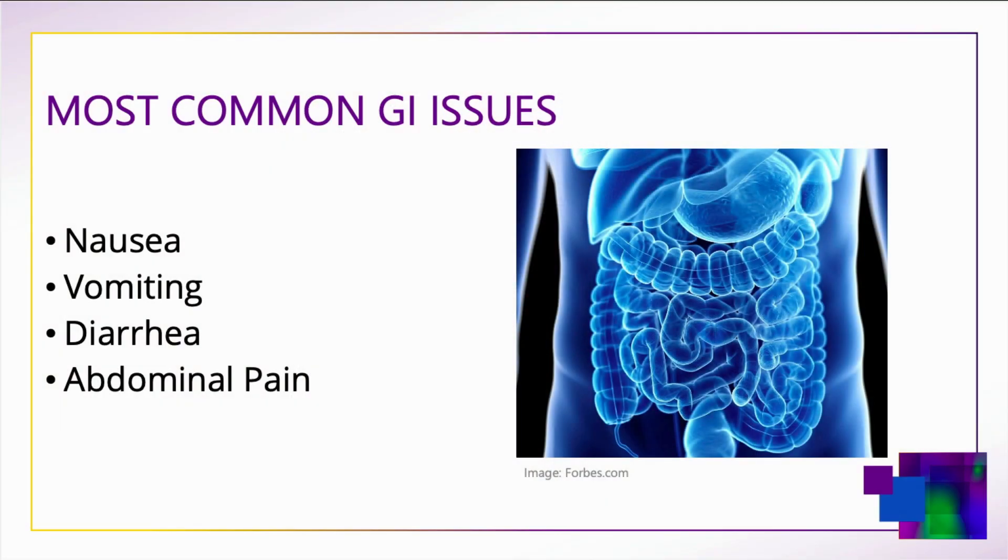The most common symptoms of COVID-19 are fever, cough, and fatigue. GI symptoms were overlooked in the early stages of the emerging pandemic; however, GI symptoms are now considered a common manifestation. The most common GI symptoms reported are diarrhea, vomiting, nausea, and abdominal pain. Severe GI symptoms have been described as hemorrhage, perforation, and severe inflammation.